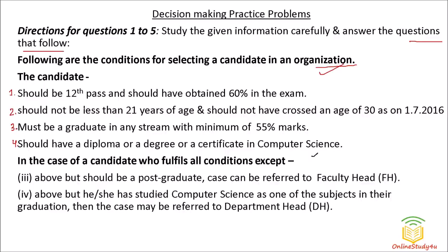Condition 1: The candidate should be 12th pass and should have obtained 60 percent in the examination — so in 12th, 10th, and graduation you should have 60 percent throughout. Condition 2: There should not be any current backlogs, or not more than one backlog, when writing the examination. Condition 3: There should not be more than 2 years of gap when writing the examination.